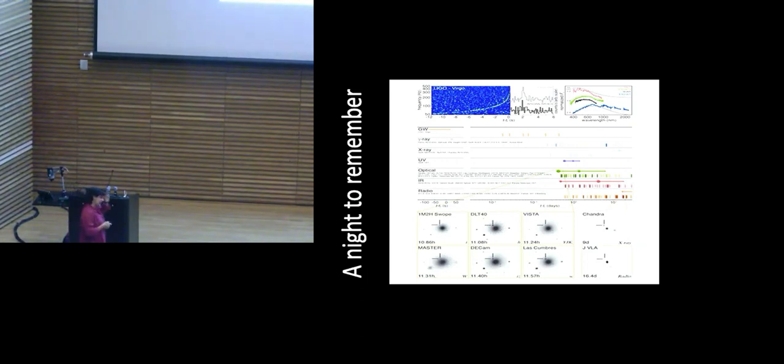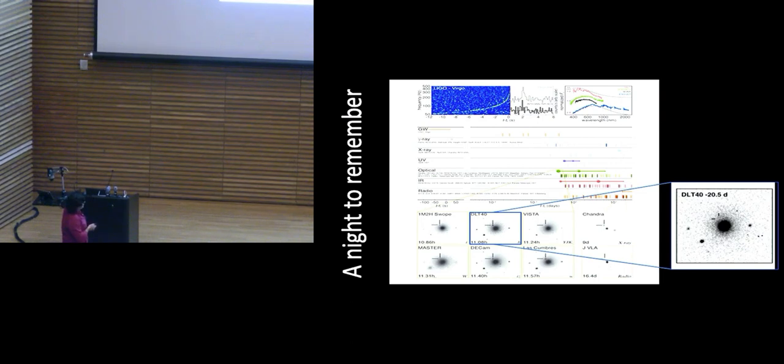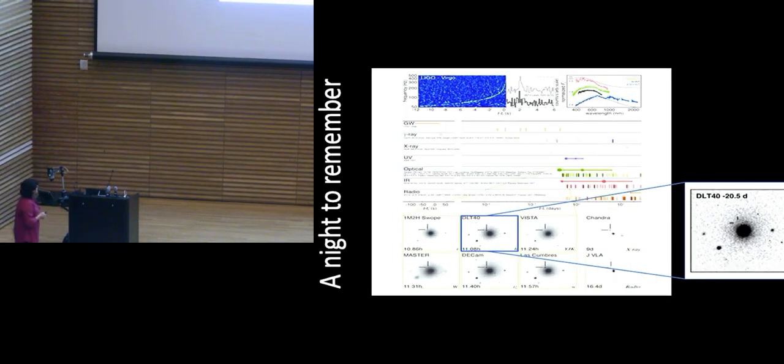This is a very busy plot. I want you to just take away two things from it. Notice that no matter what band you look in, something was seen. So it starts with gravitational waves, gamma rays, X-rays, ultraviolet, optical, infrared, radio. So every wavelength of light saw something at different times. This is images of the galaxy NGC 4993. And notice every one of these different telescopes has a crosshair on this object here. This on the left corner is the time after the LIGO trigger. And now I'll zoom in on this particular one, DLT-40. It's a telescope. And notice 20 days earlier, there's nothing in the crosshairs. Something lit up in the sky that night. And that was the first time that we were able to observe light and gravity together from the same object.